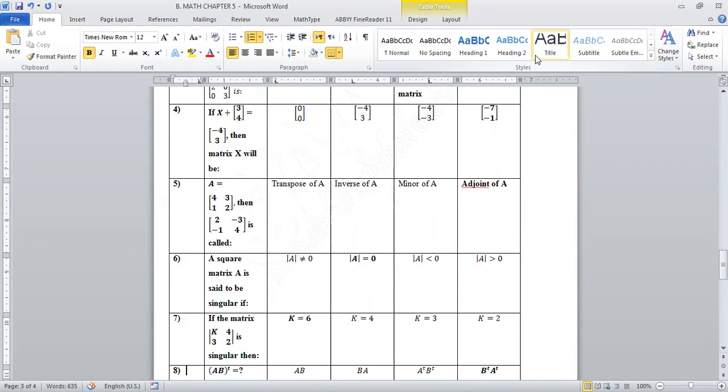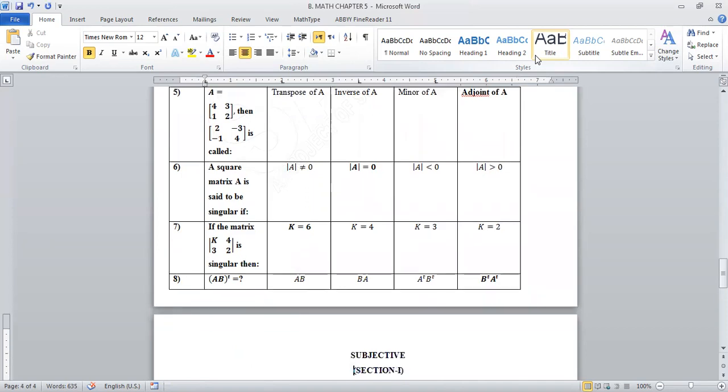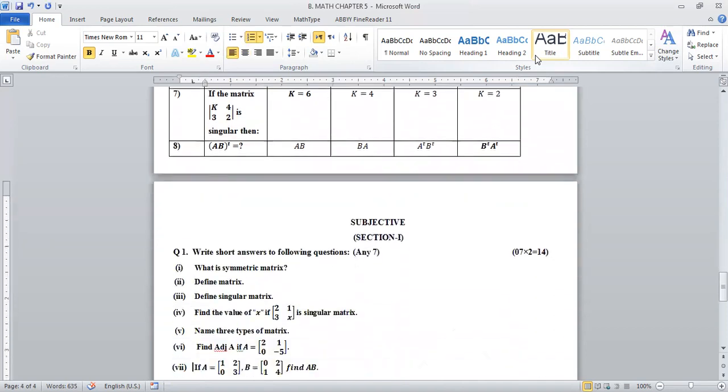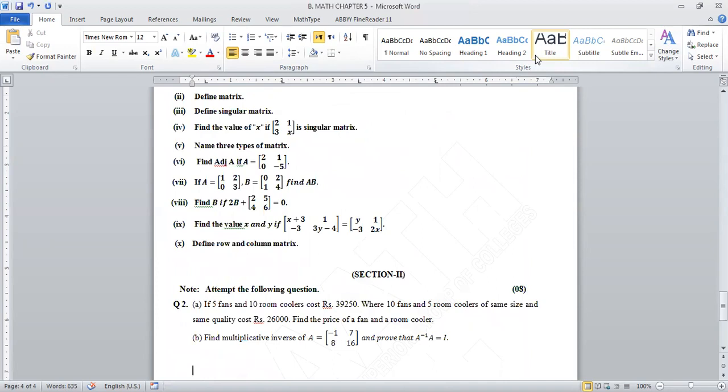If the matrix [k 4; 3 2] is singular, then k is equal to 6. (AB) transpose is equal to B transpose times A transpose. This covers the short questions, definitions, and solutions important for your exam preparation.